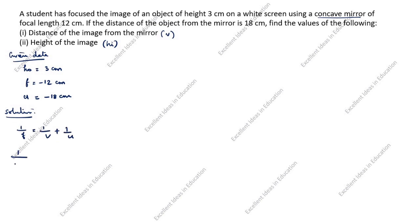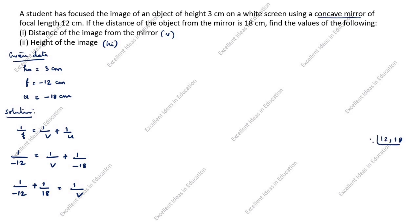Substituting: u is minus 18, f is minus 12. Rearranging, 1 by v equals 1 by minus 12 minus 1 by minus 18, which gives minus 1 by 12 plus 1 by 18. We need to take the LCM of 12 and 18 to solve this.